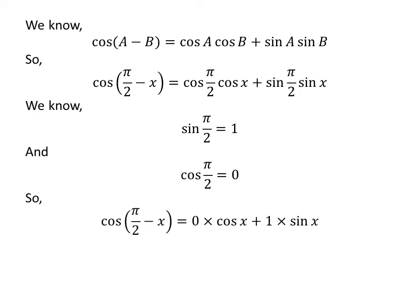Let us replace the value of sine of half of pi and cosine of half of pi in the above expression. So we get cosine of half of pi minus x is equal to 0 times cosine of x plus 1 times sine of x.